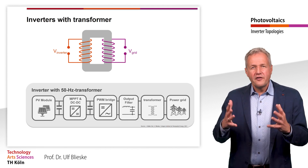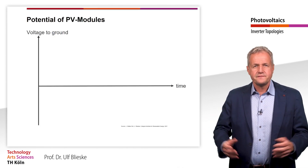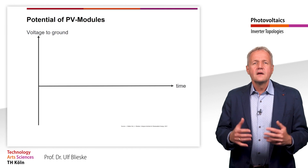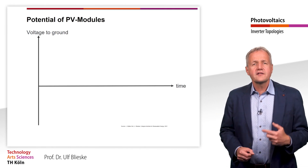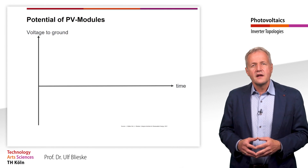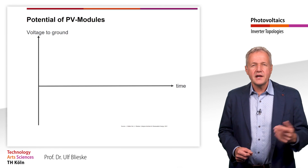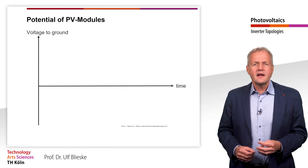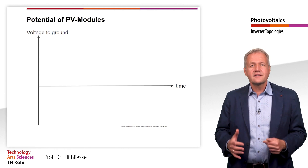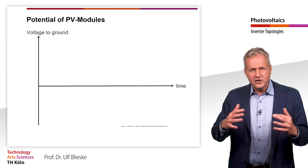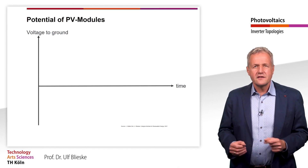However, a 50 Hz transformer is very large and heavy. In addition to galvanic isolation, the use of a transformer offers another advantage. This has to do with the potential induced degradation, called PID. To understand how the inverter topology affects the PID, let's take a look at the potential on the solar generator.